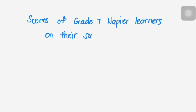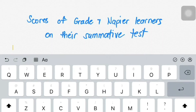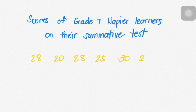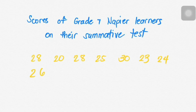We have here data of scores of Grade 7 Napier learners under summative tests. So we have here: 28, 20, 28, 25, 30, 23, 24, 26, 27, and 28.